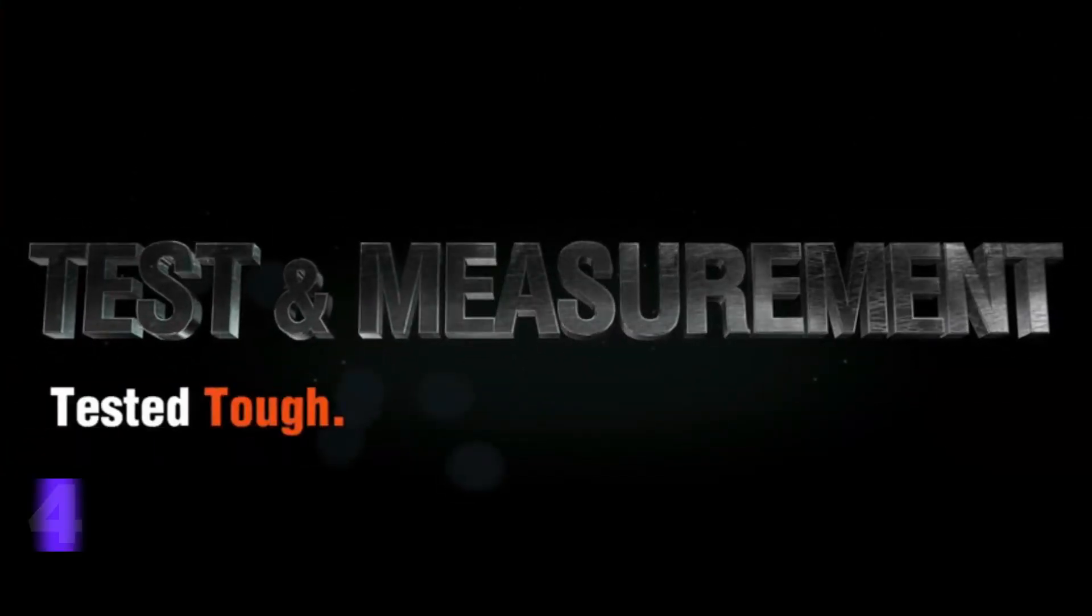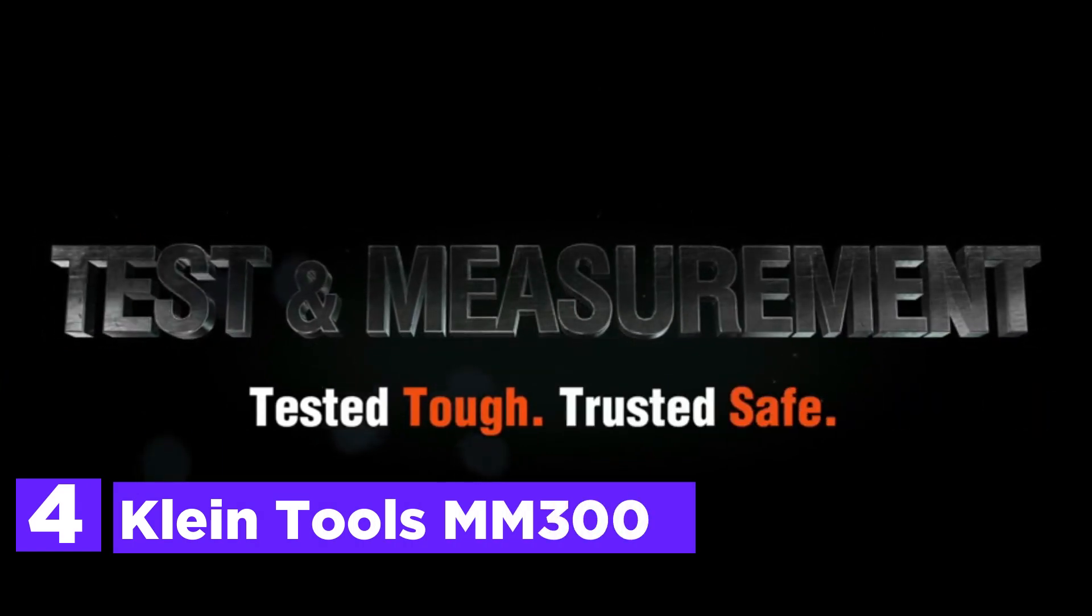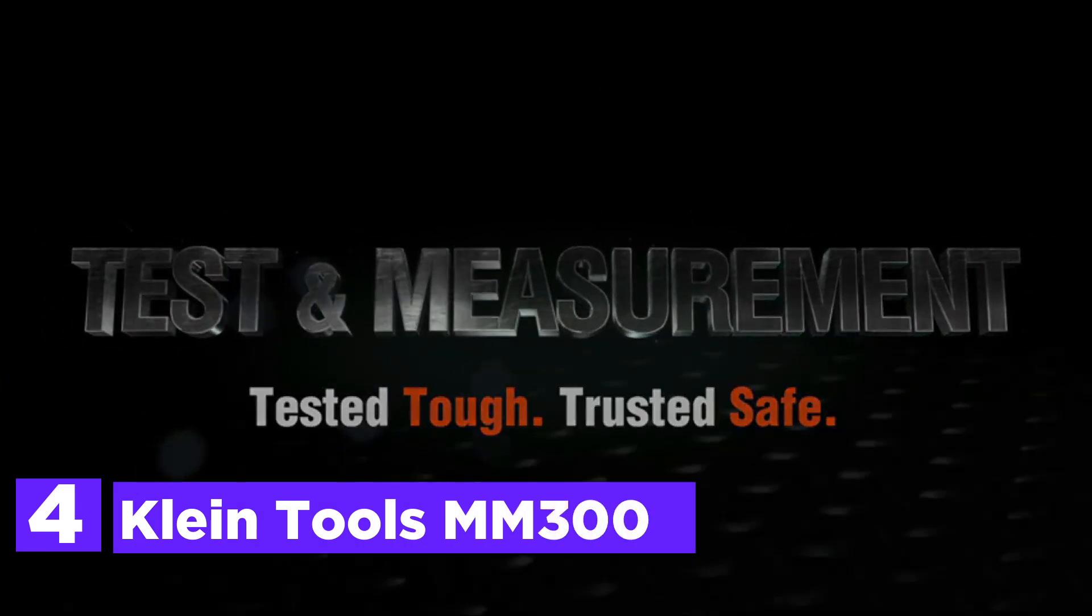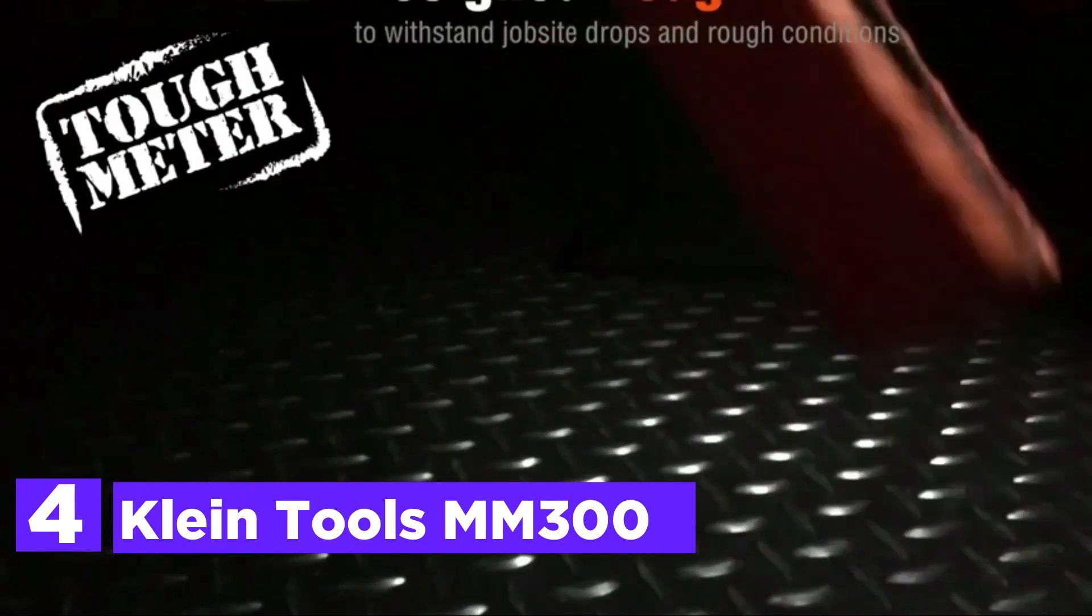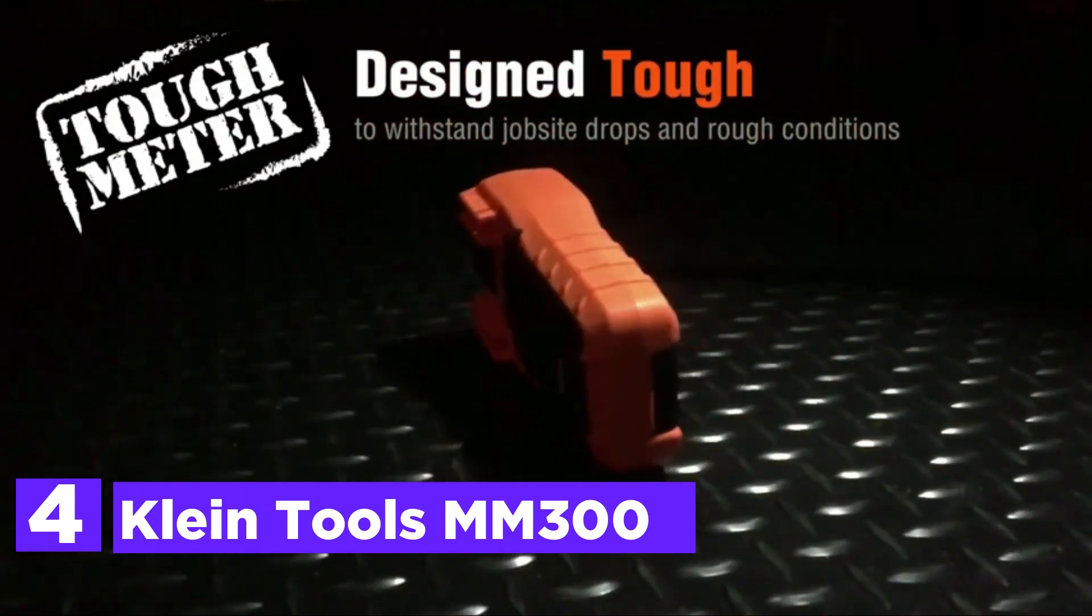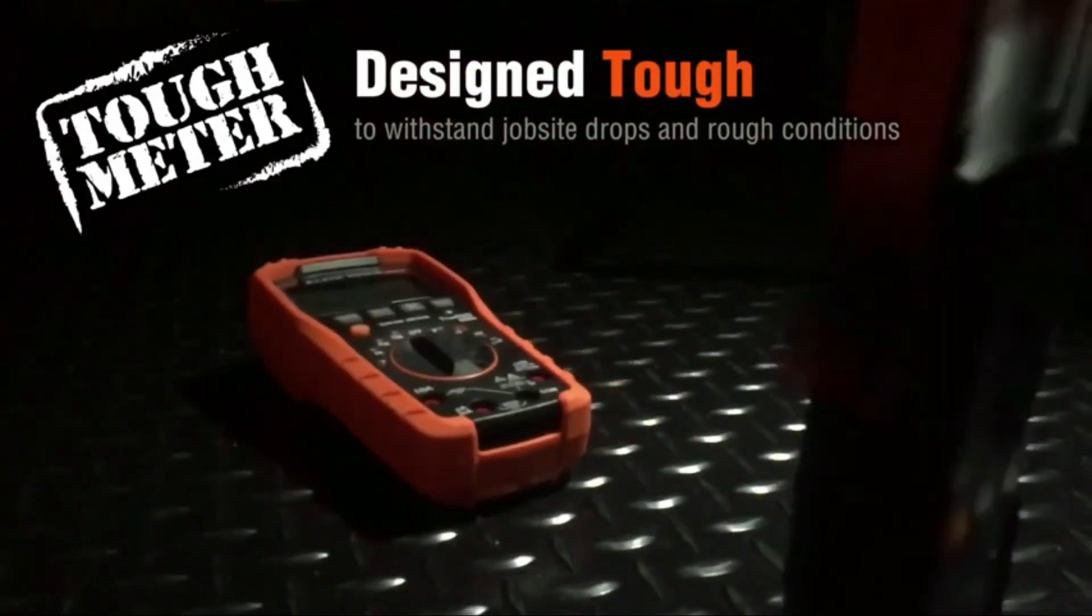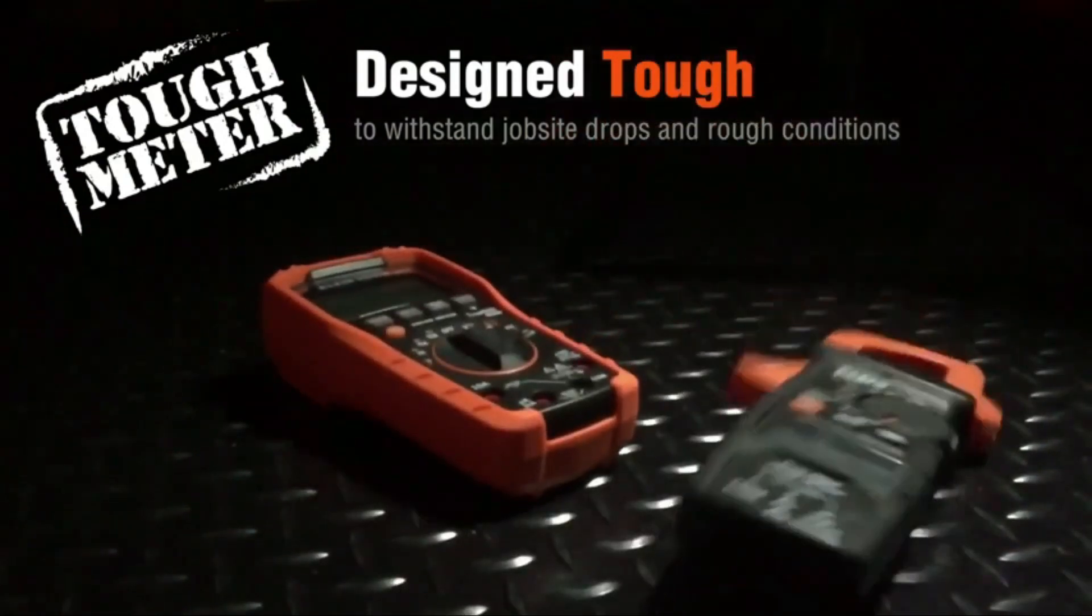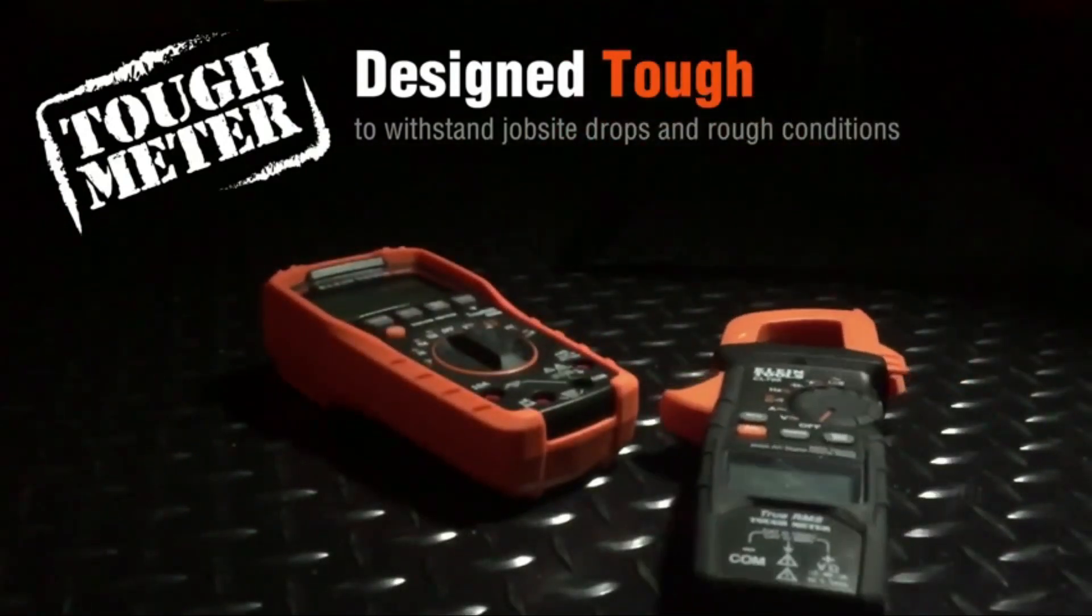Here is item number 4, Klein Tools MM300. The MM300 multimeter tests AC-DC current, voltage, and resistance. It has a safety rating of 600 V-CAT3, Class 2. Double insulation.